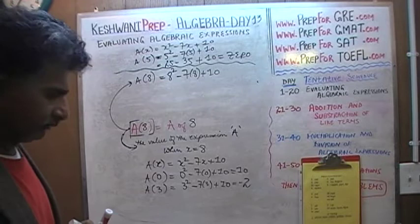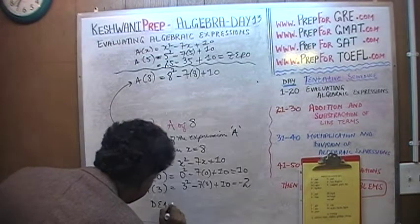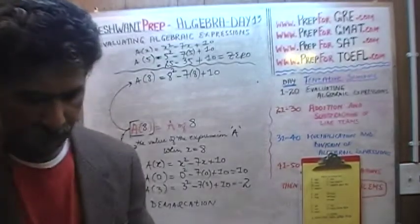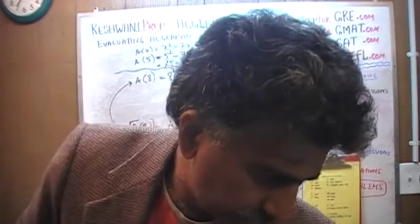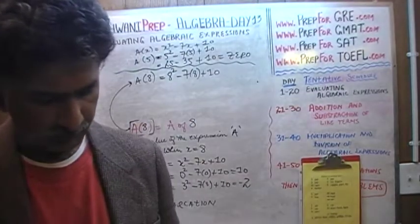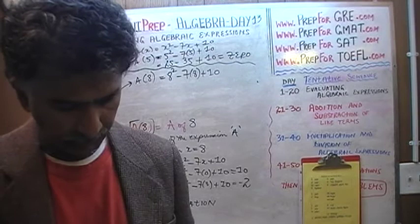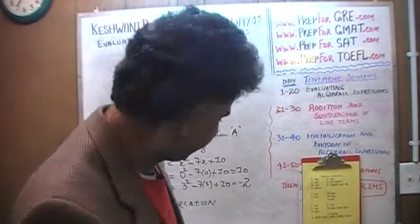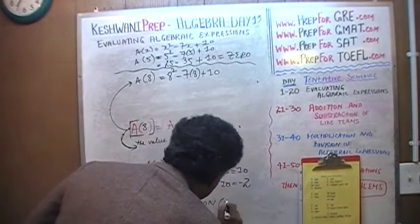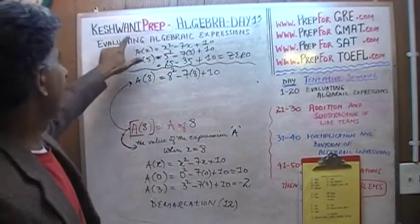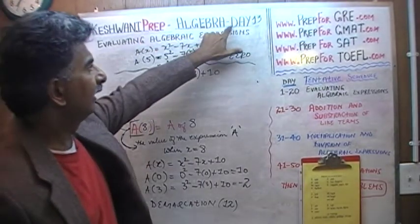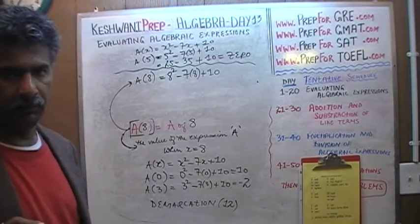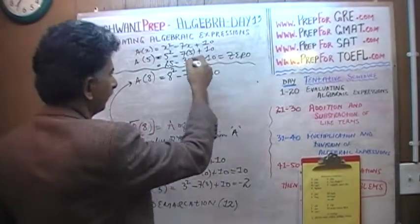If you do not know what demarcation means, we learned it in our vocabulary lessons on day number 12. Just tap in the tag keswani-prep-vocab-day-12 and you will learn the word demarcation, which means simply to put a boundary on something, to put a border around it — like we just did here.